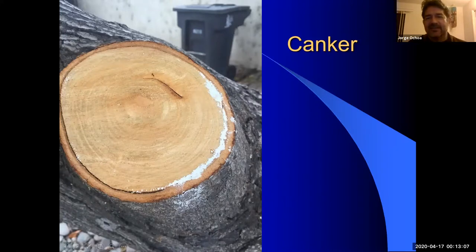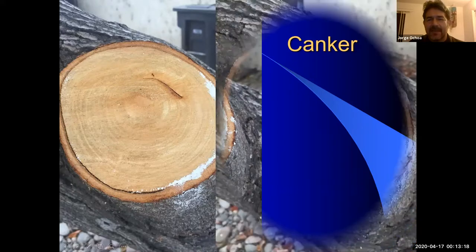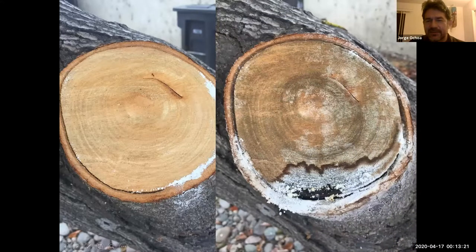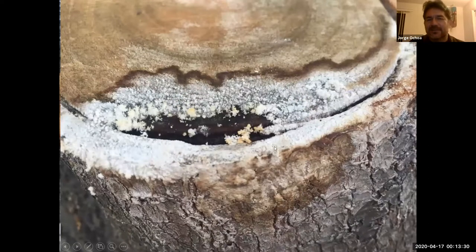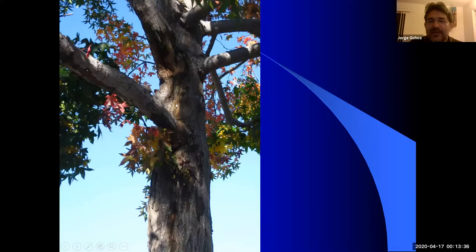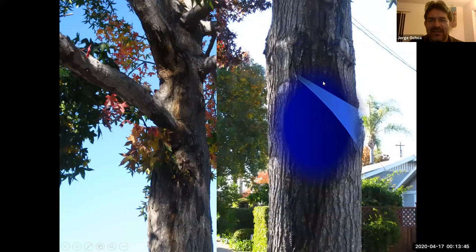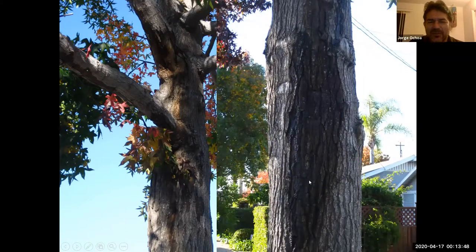There are also cankers — dead areas harboring disease. Here you can see a stem with a canker oozing bacteria or pathogen, and more areas that have died while the organism is still living inside. This is very common with American sweet gum, and you can even smell it — look for bleeding or oozing on the stem.